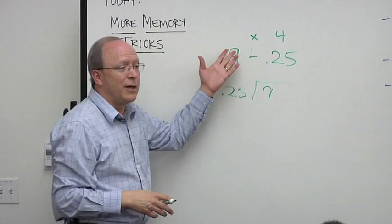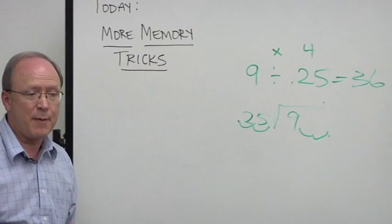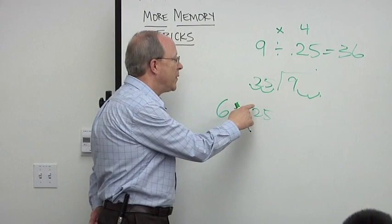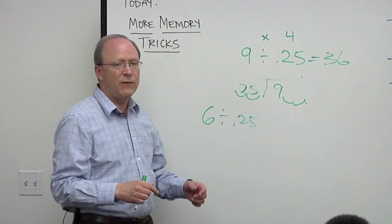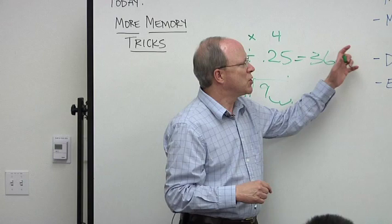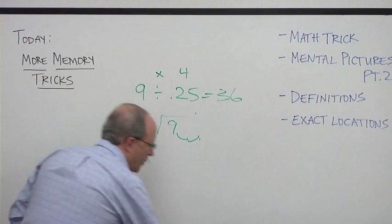Here's your math question for the day: what's 9 times 4? 36. And if you had done all that long division, you would have come up with the same answer — it would have just taken you a lot longer. So 6 divided by 0.25 would be 24, right? 6 times 4. The fact that you can do that in about one second doesn't mean you're any smarter in math; it just means you know the shortcut. The goal of last week's workshop and this week is to show you how tricks can make your memory absorb more and do better on tests.